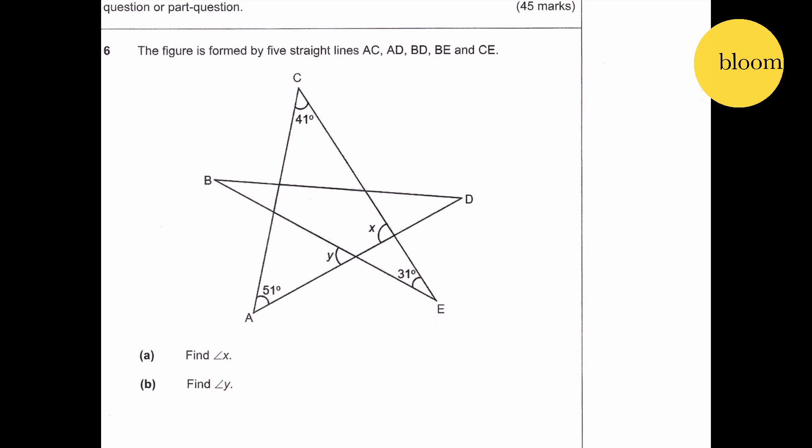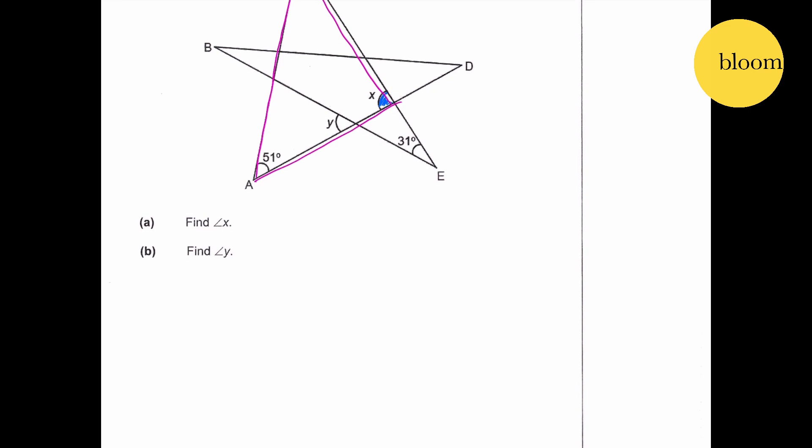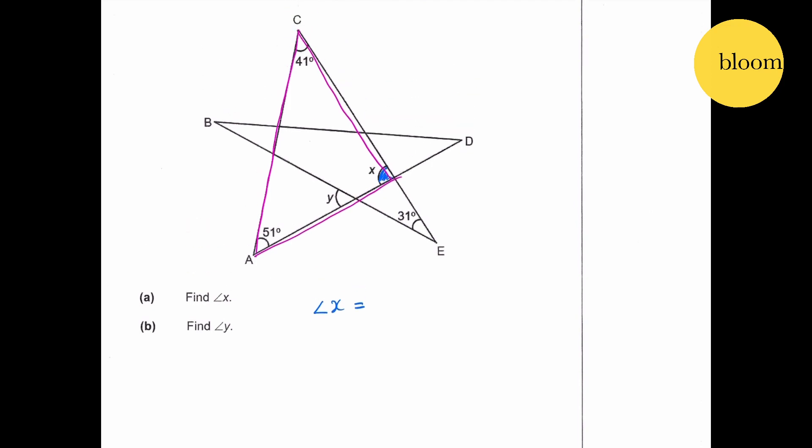Okay, angle X is over here. We can see that there is a triangle here. So the sum of the angles in the triangle is 180. X equals 180 minus 41 degrees minus 51 degrees, which gives you 88.